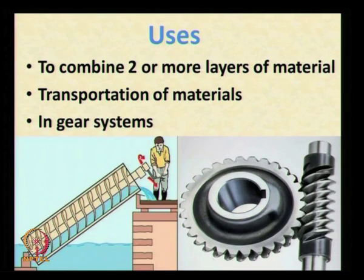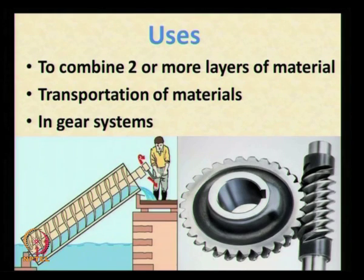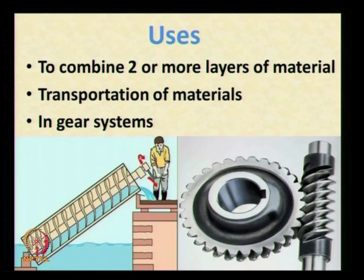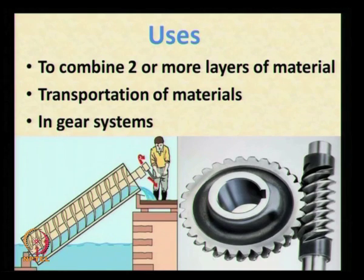Usually, we use a screw to combine two or more layers of materials, and it also is used to transport materials. For example, it is called the Archimedes screw, which lifts water by rotating the screw. Screws are also inevitable in gear systems.